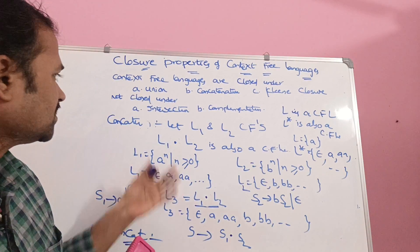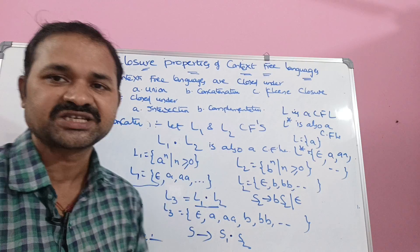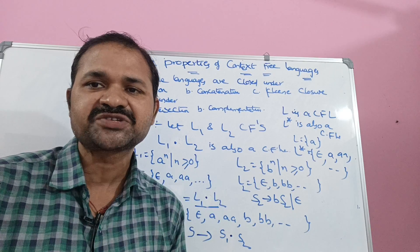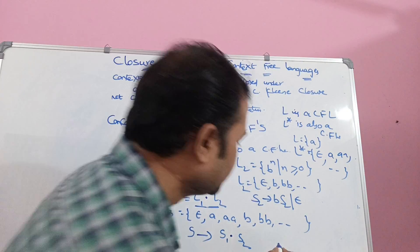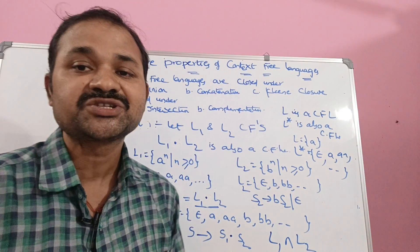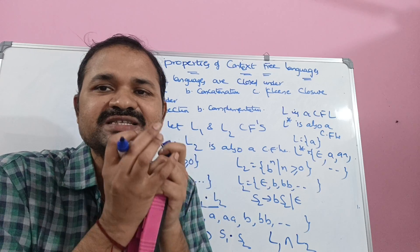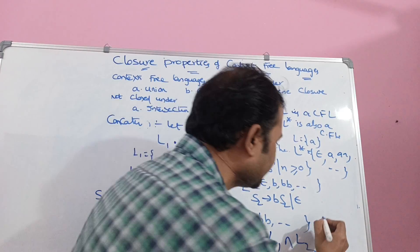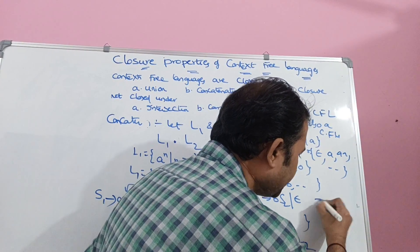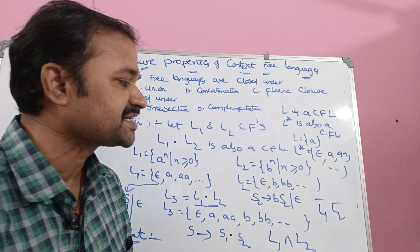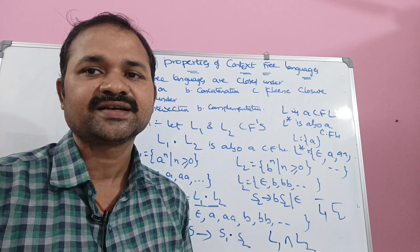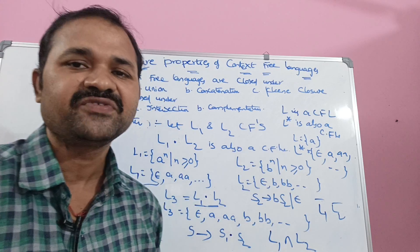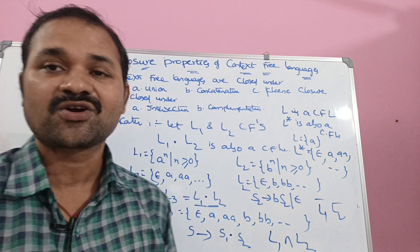Context-free languages are not closed under intersection. Intersection means common elements. If L1 and L2 are context-free languages, then L1 intersection L2 is not necessarily a context-free language. Similarly, if L1 and L2 are context-free languages, their complements L1' and L2' do not necessarily produce context-free languages. So context-free languages are closed under union, concatenation, and Kleene closure, but not closed under intersection and complementation.